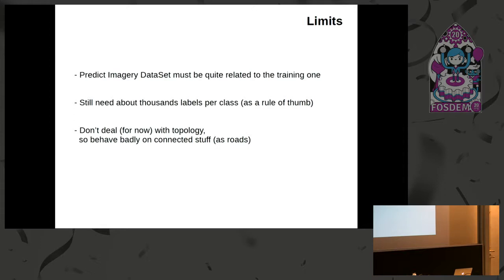What are the current limits? First, the imagery you want to predict on must be quite similar to what you trained on — remember, it's a kind of compression, so you can't expect good results if the imagery has nothing in common with the training data. For labels, you need something accurate, and the amount needed is in the thousands — at least one thousand or a few thousand depending on the case, but not a dozen. Also, right now it doesn't deal with topology. If you want to extract something topology-related like a road network, it doesn't work well. It behaves much better with surfaces of any kind.